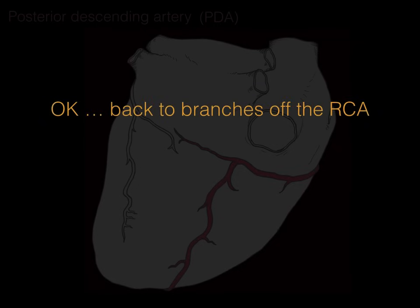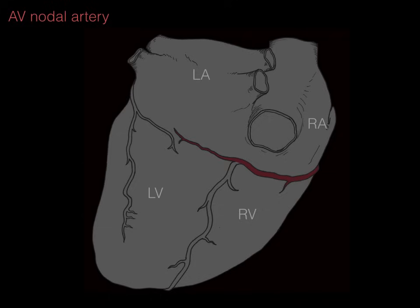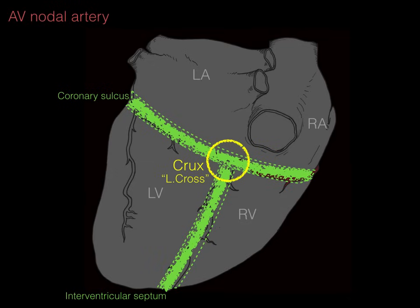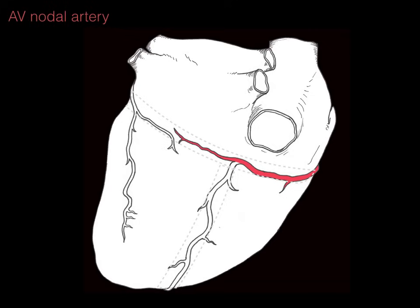Back to the branches off the right coronary artery. The crux of the heart is where the coronary sulcus and the interventricular septum form a T-shape or cross — 'crux' is cross in Latin. Right at that crux, a small artery arises called the AV nodal artery. This conducts the depolarization of the heart muscle from the atria down to the ventricles via the conduction system.